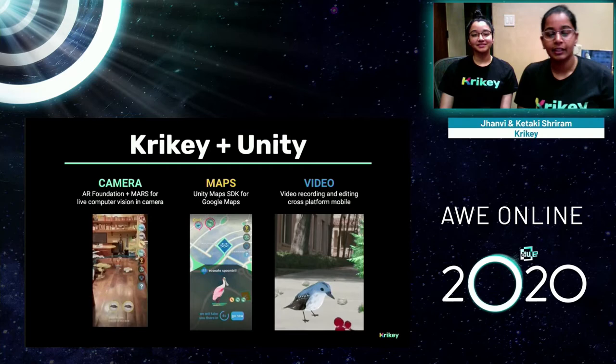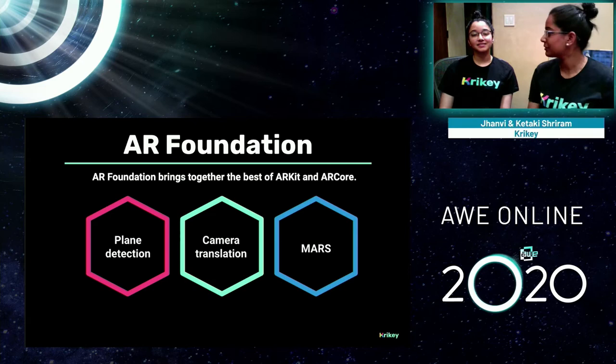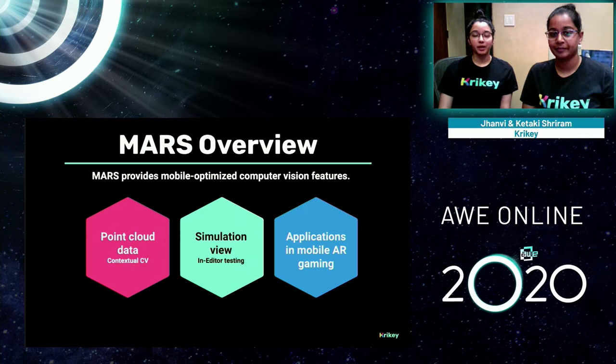We use AR Foundation, which brings together the best of ARKit and ARCore and is a tool provided by Unity. It covers plane detection and camera translation. MARS is a new tool from Unity that provides mobile-optimized computer vision features for developers. Using raw point cloud data, we can develop custom contextual computer vision applications. MARS also allows us to do end-to-end testing directly in the simulation view inside the Unity Editor, meaning we don't have to make builds all the time to test AR games.